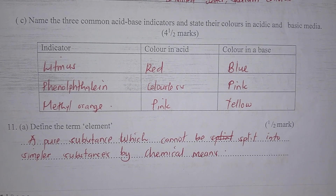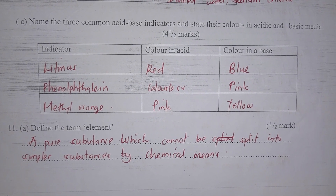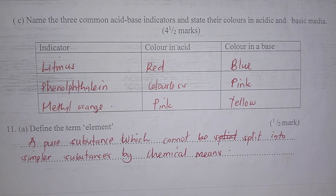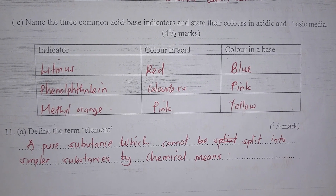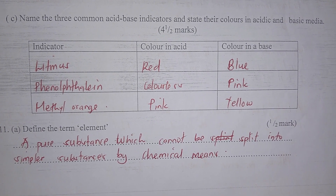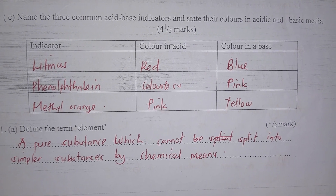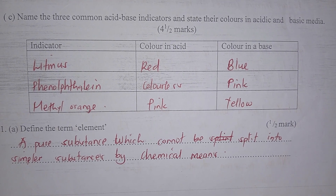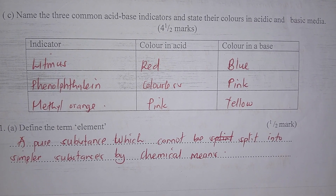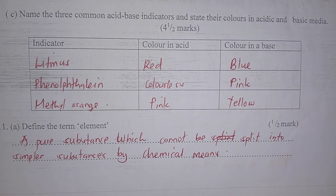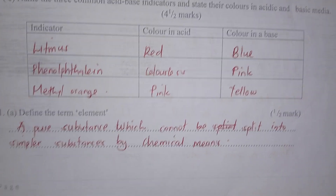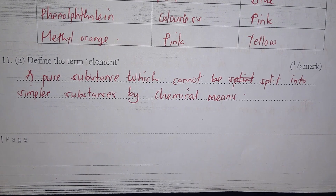Name common acid-base indicators and state their colors in an acid and basic medium. Litmus is red in acid and blue in base. Phenolphthalein is colorless in an acid and pink in a base. Methyl orange is pink in an acid and yellow in a base.